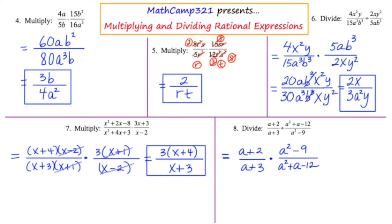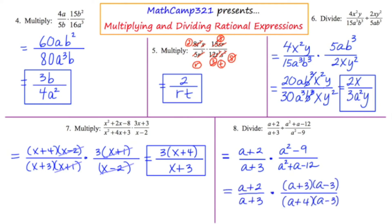The upper right appears to be a difference of two squares, and the bottom right looks like a straightforward trinomial factoring. I'm going to go ahead and factor both. After factoring the upper right and the lower right, I notice that a lot of things are going to cancel — it's pretty awesome.